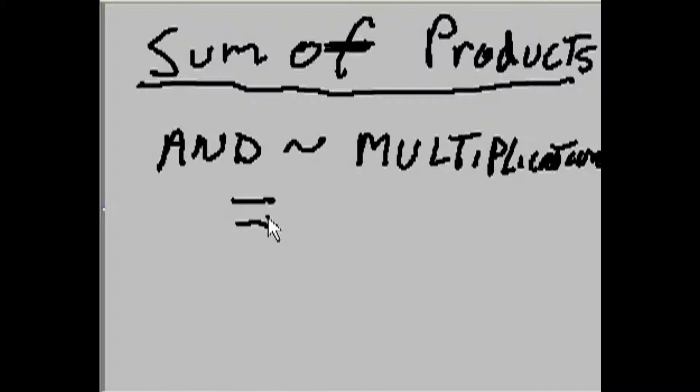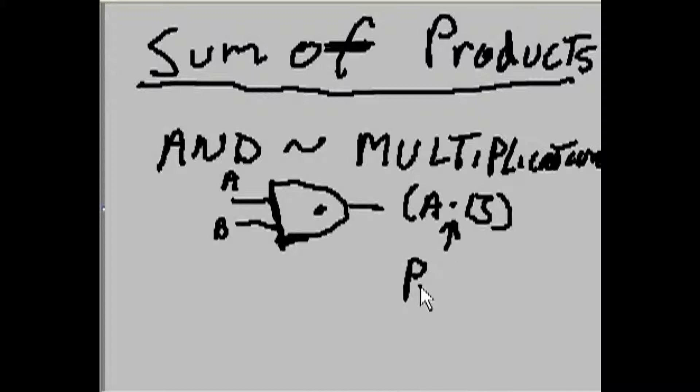So, whenever you have a two-input AND gate, you'll see the little dot on the AND gate. That's your multiplication right there. So, when you have A and B here, this becomes A and B. And, of course, this indicates a product.